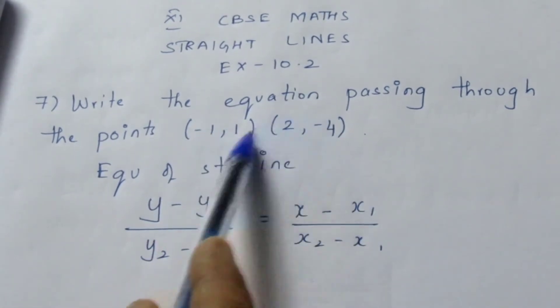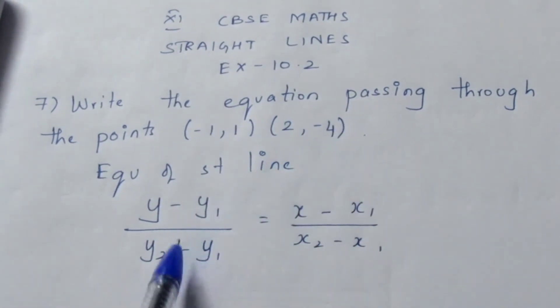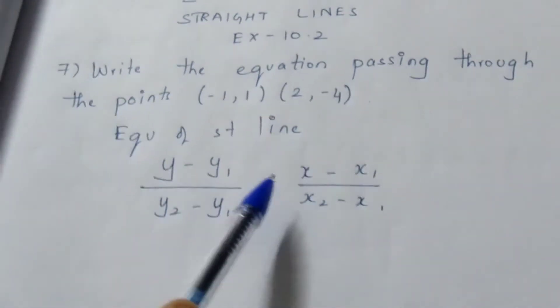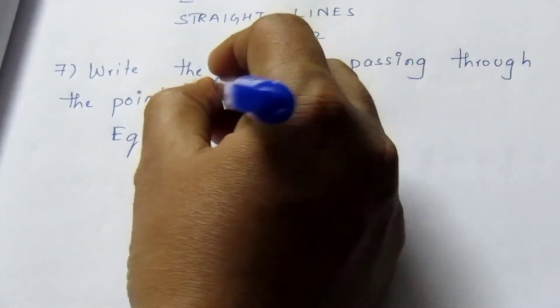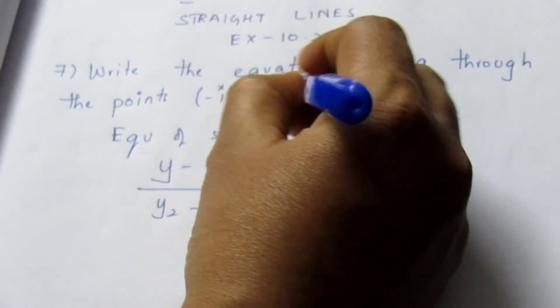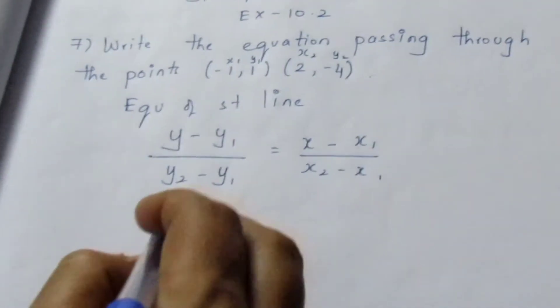Here there are two points. So if two points are given, then we need to take the two-point equation. Here the given points are x₁, y₁, x₂, and y₂. Just substitute the values.